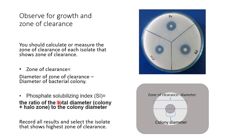Another term — the phosphate solubilizing index — is the ratio of the total diameter (colony plus halo zone) divided by the colony diameter alone. Record all results and select the isolate that shows the highest zone of clearance.